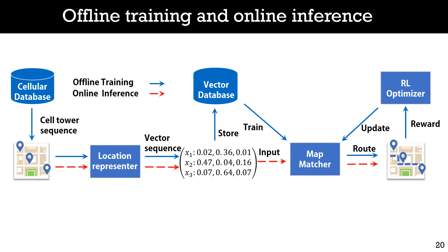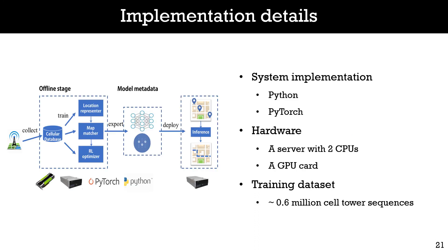In the online inference stage, cell tower sequences are continuously fed into our system for route inference. For a cell tower sequence, our system first transforms it into a vector sequence by the location representer, and passes the vector sequence into the final map matching model to identify the most likely route on the road map.